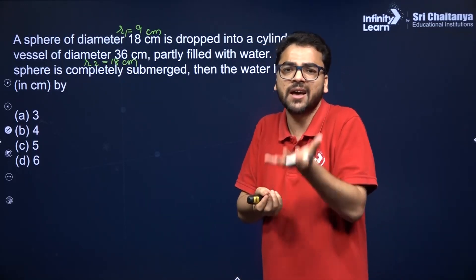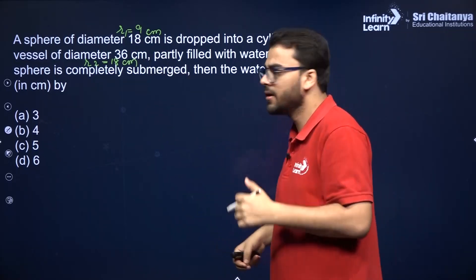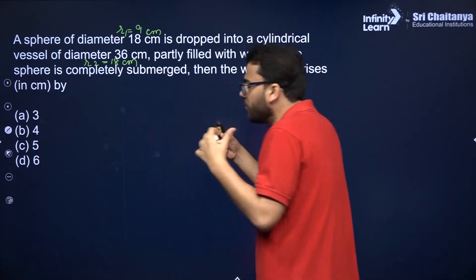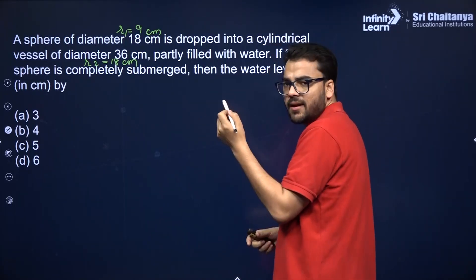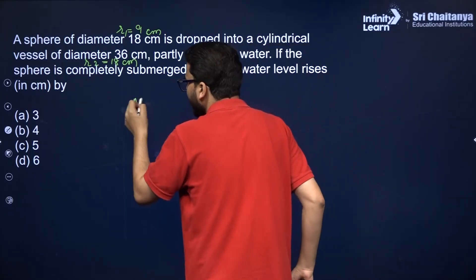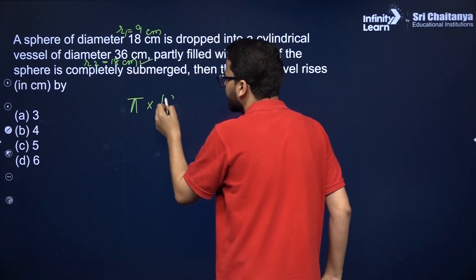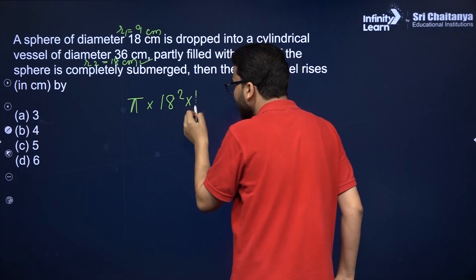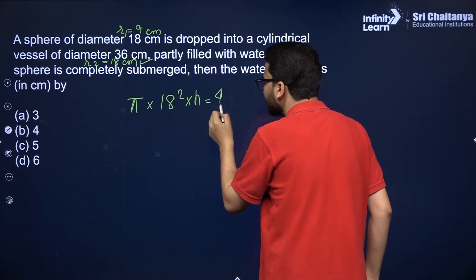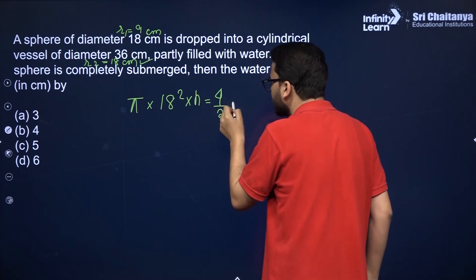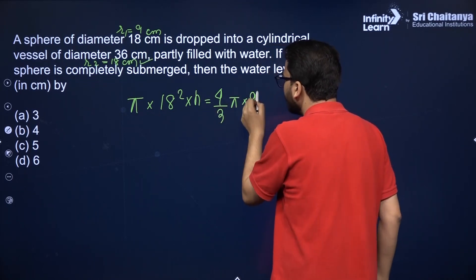The amount of water which has risen is equal to the volume of the sphere dropped in it. The volume of water which has risen is cylindrical, so it is π r² h — where r here is 18. So it is π × 18² × h, where h is the rise in water level. This is equal to the volume of the sphere: 4/3 π × 9³.